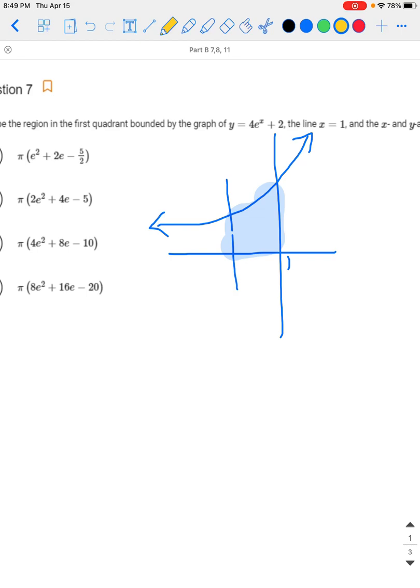It says that the cross sections perpendicular to the x-axis are semicircles. What that means is that's going this way and coming out are semicircles, and so on. You've got to figure out what the area of a semicircle is. You're supposed to do pi times the integral.